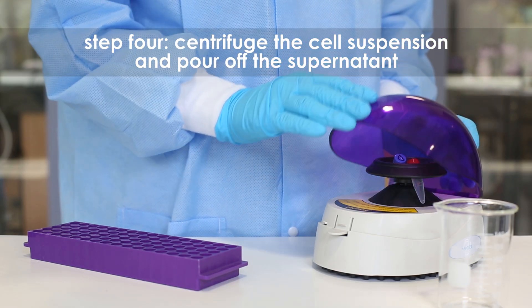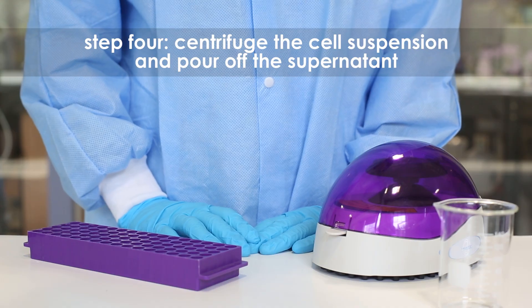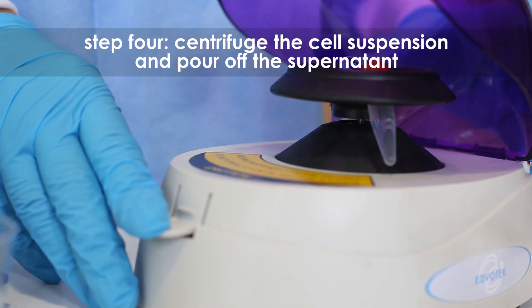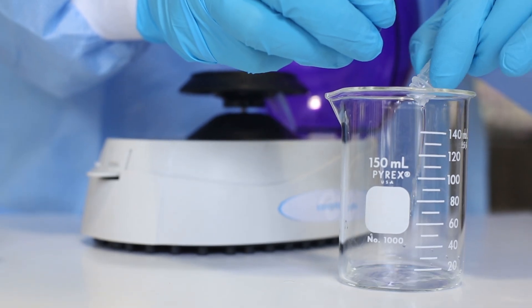Step 4: Centrifuge the cell suspension for 2 minutes at full speed to pellet the cells. Pour off the supernatant. Take extra care not to disturb the cell pellet.